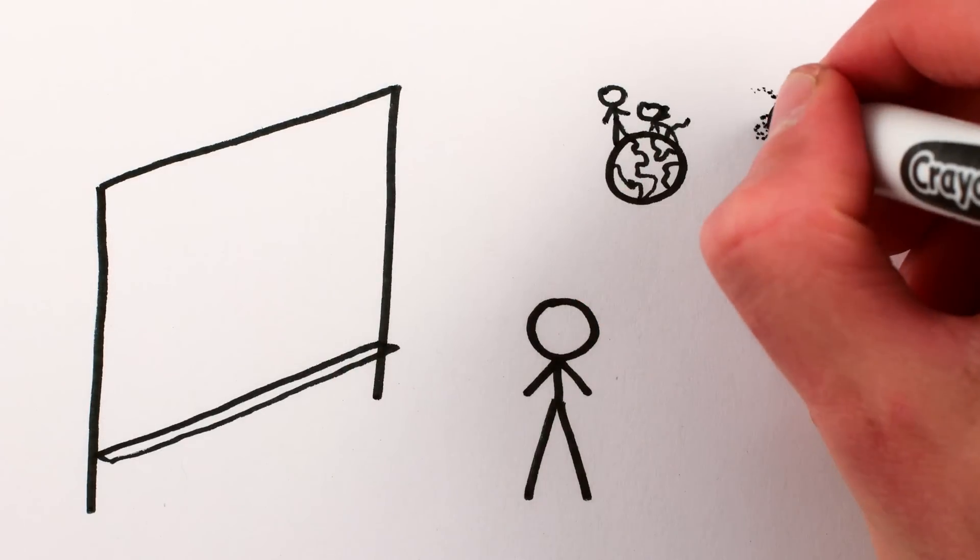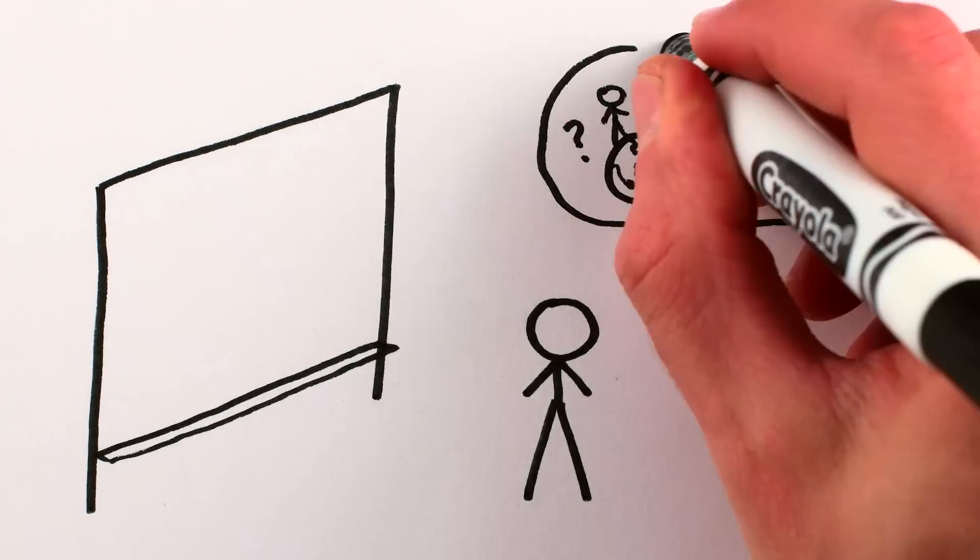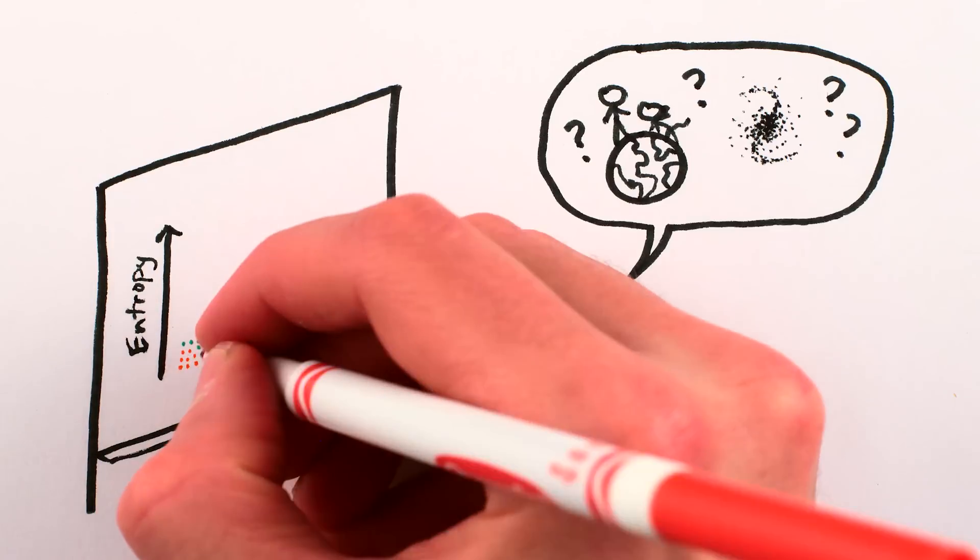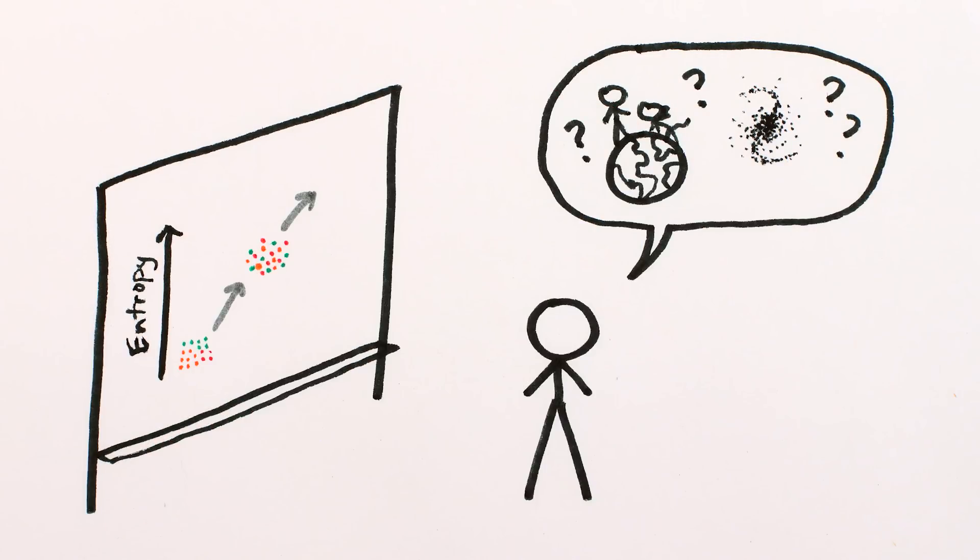But we can still ask, why do intricate, complex structures come into being in the universe if the overall tendency is toward increasing disorder?